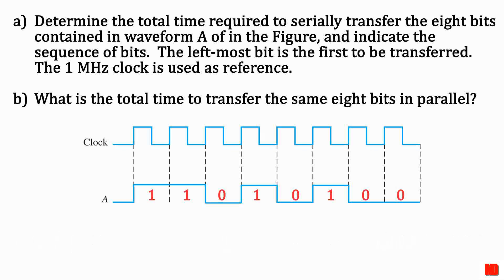Last, we want to know how long it takes to transfer 8 bits in parallel. Since all the bits are transferred in 1 clock pulse, and the period of 1 clock pulse is 1 microsecond, it takes 1 microsecond to transfer the 8 bits in parallel.